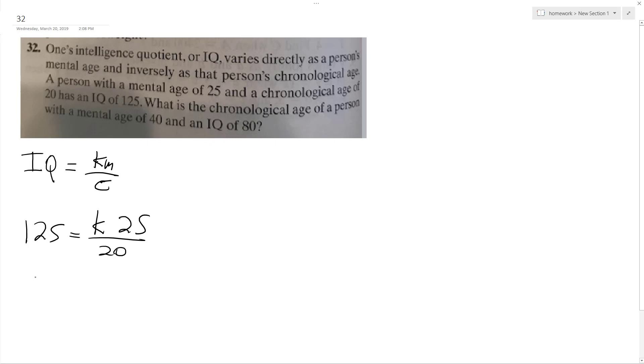So K equals 125 times 20 divided by 25, and that gives us a K constant of 100.